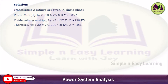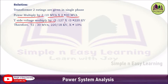For transformer T2, ratings are given in single phase, so you need to multiply the power by 3. Power rating is 10 MVA per unit, with three units, giving 30 MVA. For the star side voltage, multiply by root 3: 127 × √3 = 220 kV. Therefore, the transformer rating becomes 30 MVA, 220/18 kV, x = 10%.